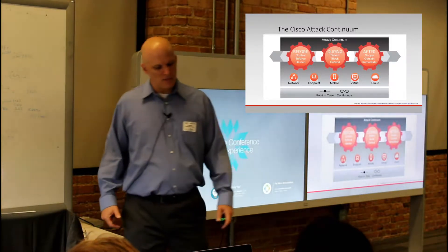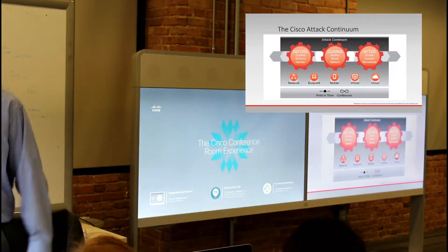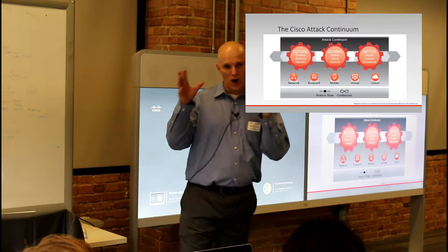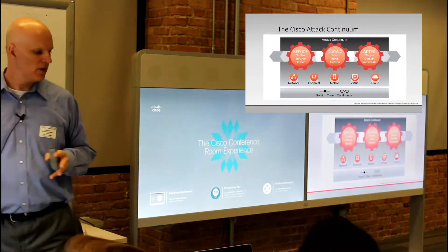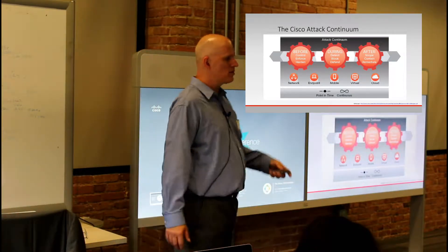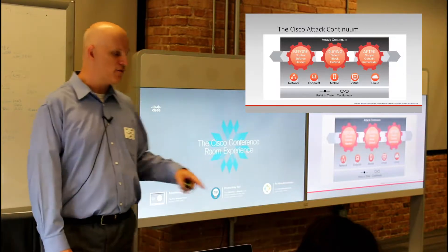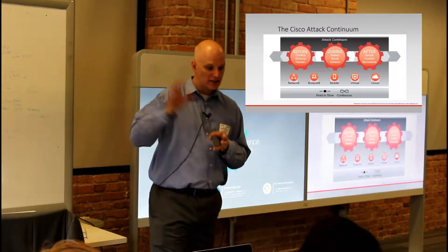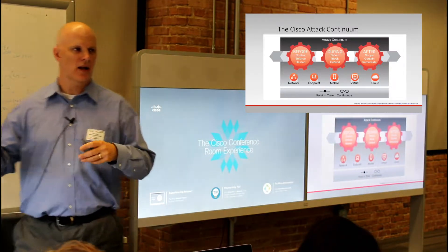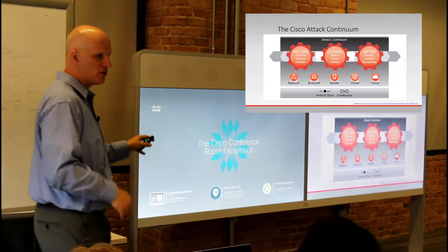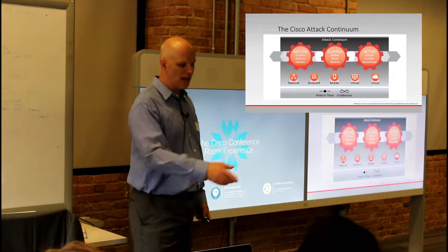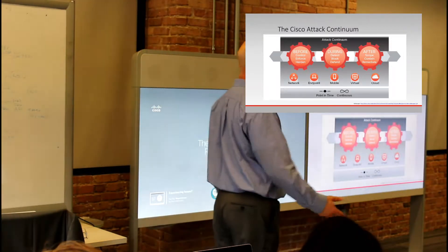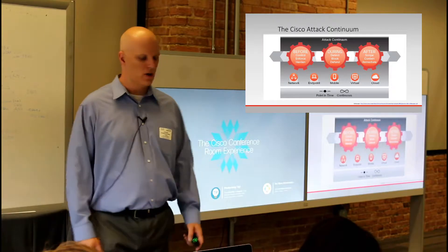So the Before During and After model works like this: Cisco says they'll still do their best efforts before an attack — control, enforce, and harden to prevent attacks from permeating. They'll also watch so that if something gets through they can detect, block, and defend. The unique part is the after phase, where they admit some things may get through. When they find out it has happened, they scope, contain, and remediate — and lessons learned are passed back to the previous phases. This applies across all platforms: network infrastructure, endpoint, mobile, virtual, and cloud.